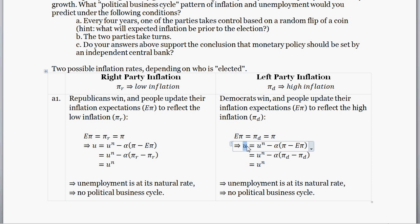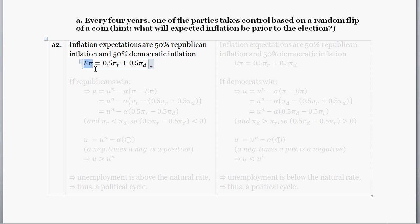However, there's a different way to interpret Part A. Suppose people's expected inflation doesn't get updated once they find out who the winner of the election is. Since it's a coin toss — a 50-50 chance of either the left party or the right party winning — when people set their inflation expectations they face a 50% chance Republicans win and a 50% chance Democrats win. So their expected inflation is going to be somewhere between the two inflation rates: 0.5 times pi sub r plus 0.5 times pi sub d, where pi sub r is the low inflation regime and pi sub d is the high inflation regime.